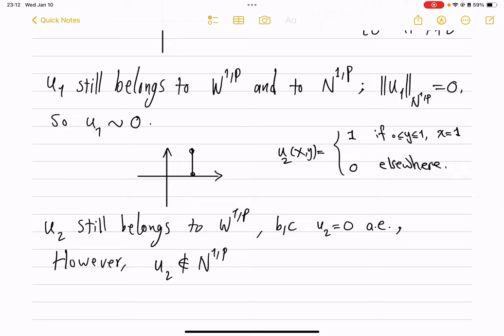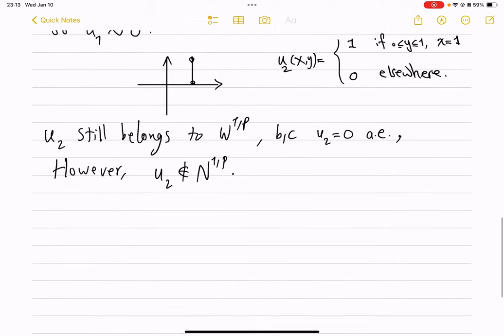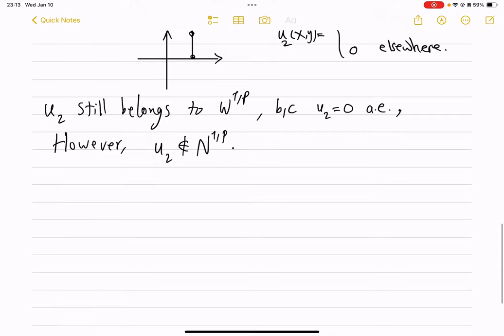So as a point, as an everywhere defined function, which is the convention we're using throughout, this function is not in N^{1,p}. So when in the theorem we said that W^{1,p} equals to N^{1,p}, what happens to example u_2? And that is where the interpretation of that equality should be understood.